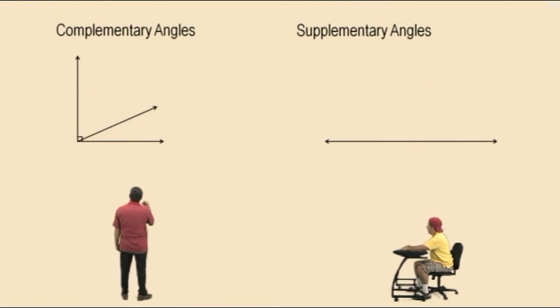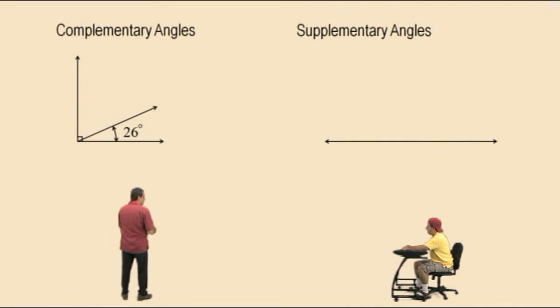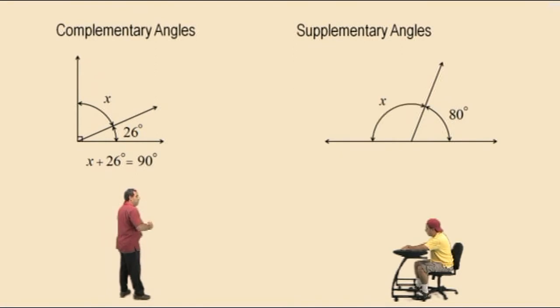Okay, Charlie, now, suppose one angle was 26 degrees and the other angle was represented by x. Then we would say the sum of x and 26 degrees must equal 90 degrees, and solving for x, you would obviously get 64 degrees. In the other case, if one angle was 80 degrees and the other angle was represented by the variable x, we would say x plus 80 degrees has to equal 180 degrees. And solving for x, you'd get x equals 100 degrees.